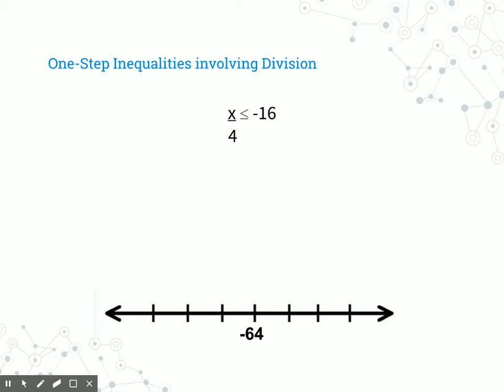Let's look at one with division. If I were multiplying by a negative 4, I would have to flip the sign. But in this case, with this division problem, I'm going to end up multiplying by a positive 4, so the sign stays in the same direction, giving us x is less than or equal to negative 64. Since it has that less than or equal to sign, we make it a closed dot, and all solutions to the left are solutions because those are all less than or equal to negative 64.